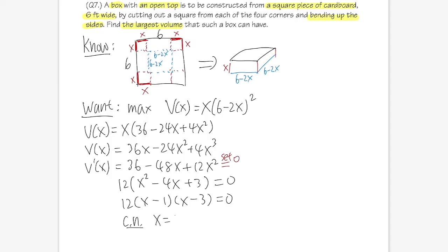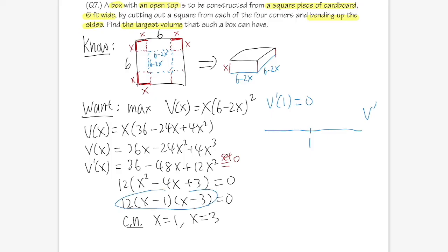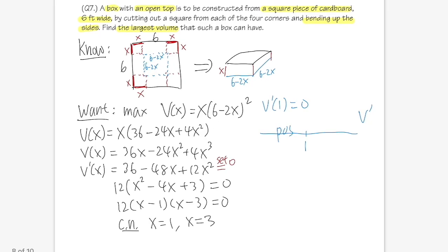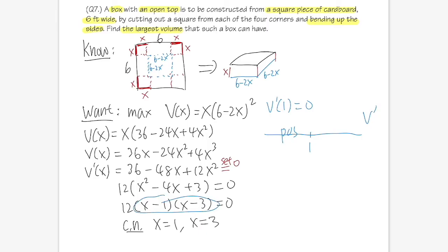So x = 1 or x = 3. Be careful: x = 3 is not valid because cutting off 3 feet from each side of a 6-foot board leaves nothing — zero volume. Let's verify using the first derivative test. Pick x = 0.5 (less than 1): we get a positive derivative, since (0.5 minus 1) and (0.5 minus 3) are both negative, giving a positive product.